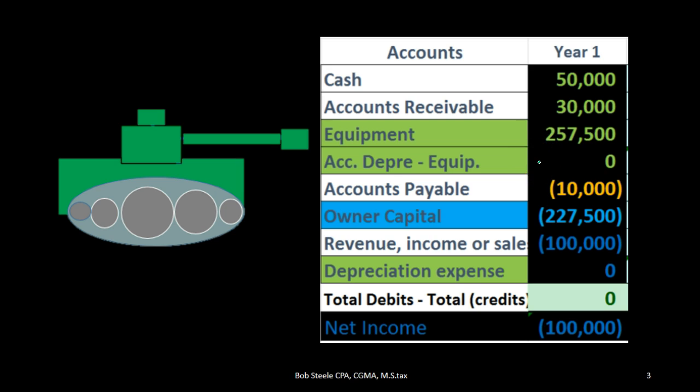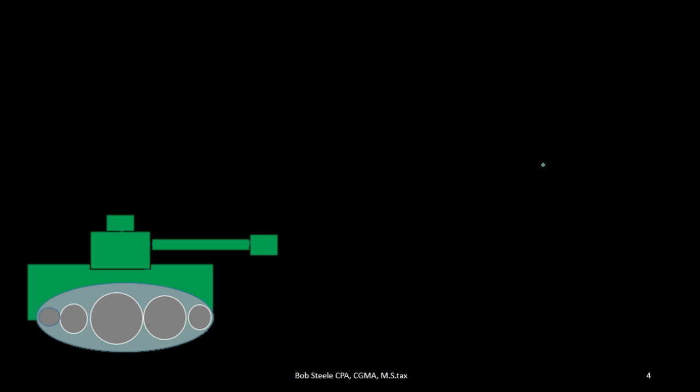Why would we do that? Because it tells our reader a few different things. It shows the original cost and then decreases that cost over the useful life as an estimate. Since it's just an estimate and the equipment doesn't physically go away, we record the decrease in value in a separate account to show that decrease clearly.